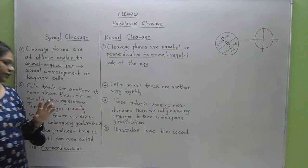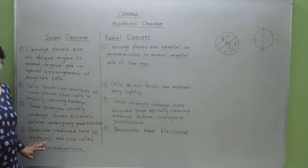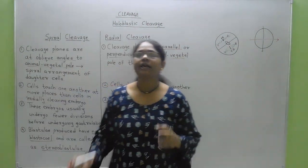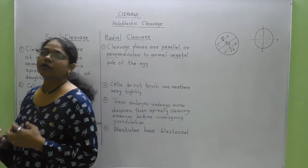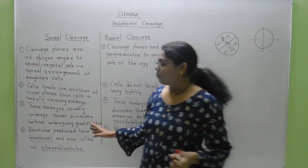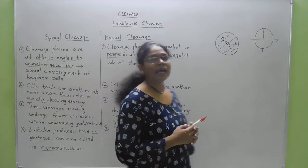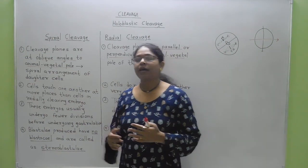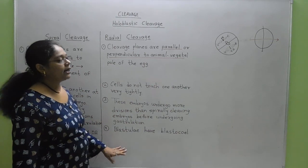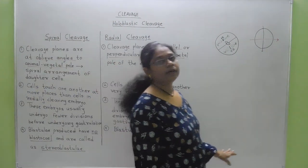The last difference is that the blastula produced by spiral cleavage has no blastocoel and is termed a stereoblastula. Because cells are tightly in contact with each other in spirally cleaving embryos, there is no production of blastocoel when the blastula is formed. Such a blastula is called a stereoblastula, whereas in the radially cleaving embryo, there is a blastocoel present in the blastula.